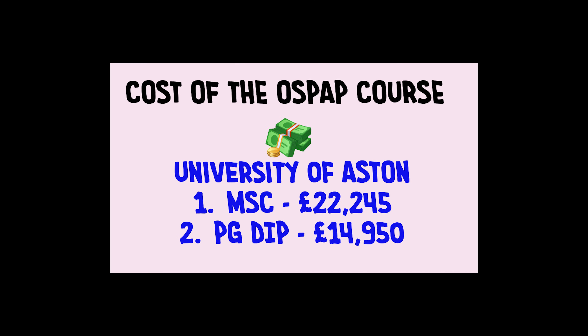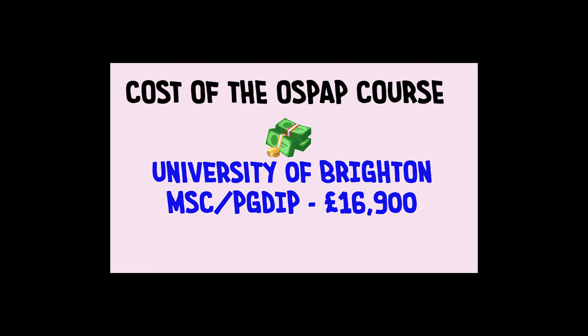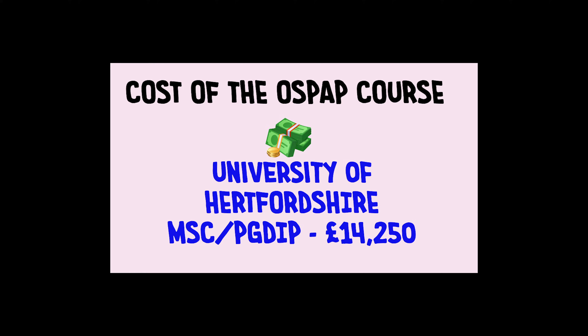For University of Aston, the MSc is around £20,000–£23,000 (around 23 lakh INR) and the PG Diploma is around £15,000 (around 15 lakh INR). University of Brighton lists the full course cost at £16,900 (around 17 lakh INR) though the MSc/PG Diploma distinction is not entirely clear on their website. University of Hertfordshire lists the PG Diploma in Pharmacy at £14,250 (around 15 lakh INR).